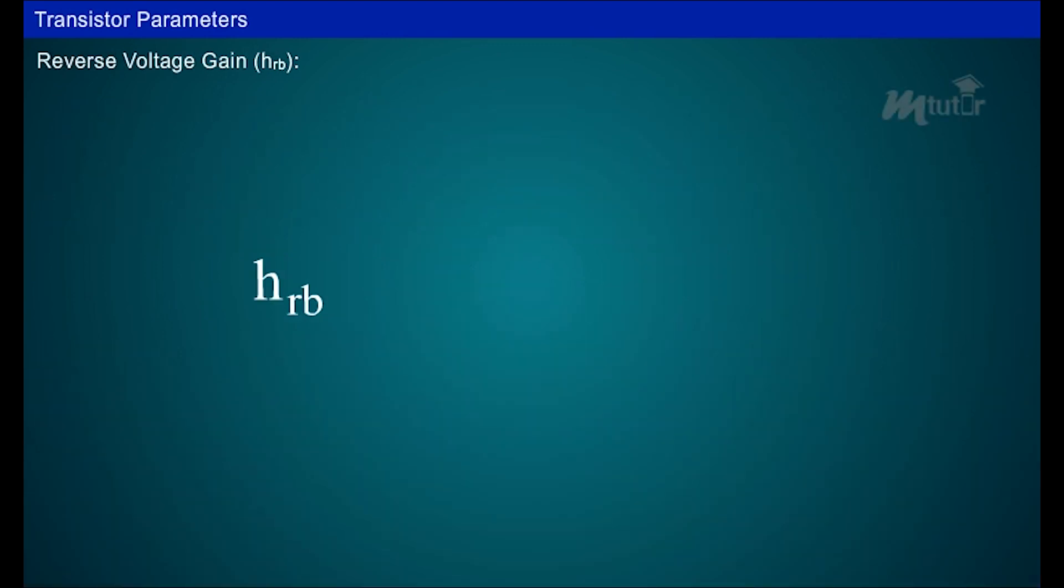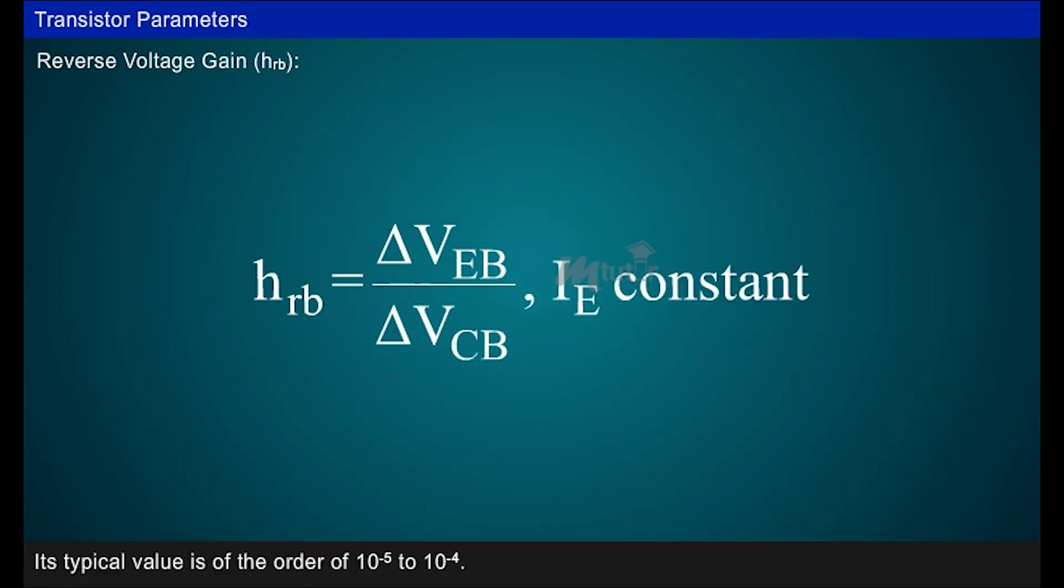Reverse voltage gain, HRB, is the ratio of change in the emitter voltage to the corresponding change in collector voltage with constant emitter current, IE. Its typical value is in the order of 10 to the power of minus 5 to 10 to the power of minus 4.